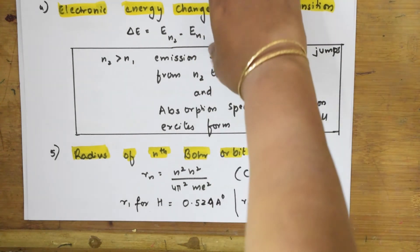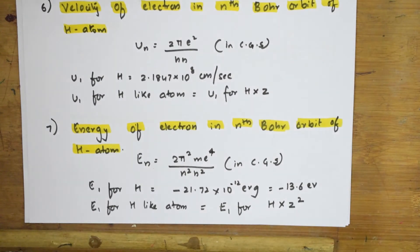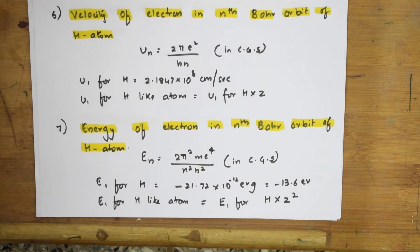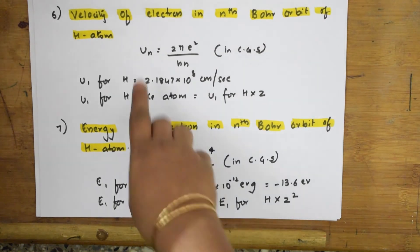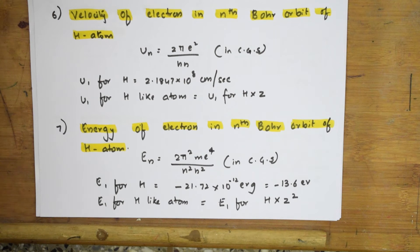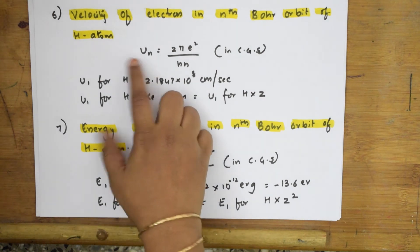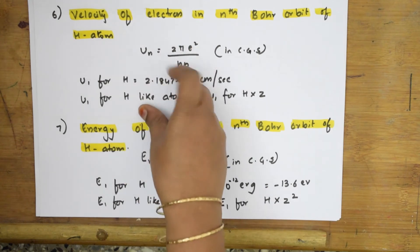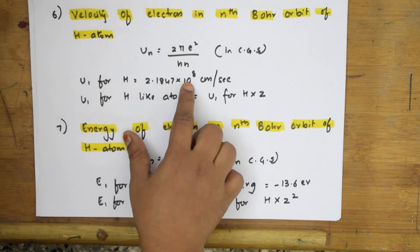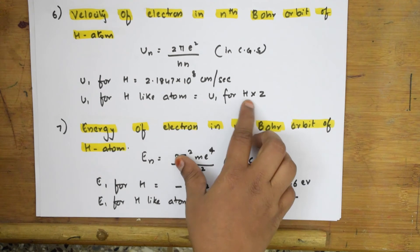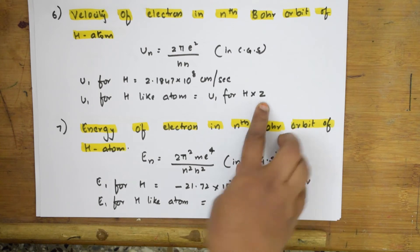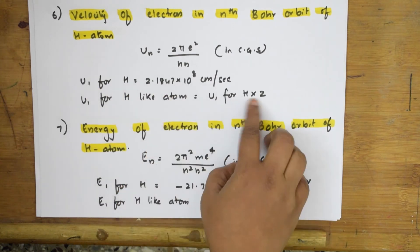For velocity of the electron in the nth Bohr orbit, the formula is u_n = 2πe² / (hn). The value of u₁ for hydrogen is given. For a hydrogen-like atom, you multiply u₁ by the atomic number Z, giving u₁ = 2.187 × 10⁸ × Z m/s. Questions will ask you to find the velocity of the electron in the nth Bohr orbit of a hydrogen or hydrogen-like atom.